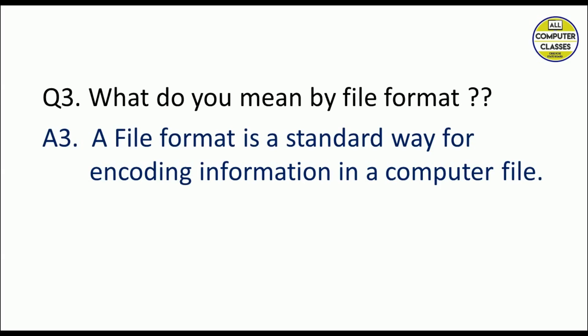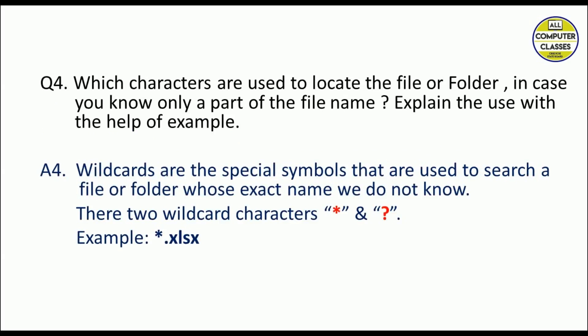Which characters are used to locate file and folders in case you know only a part of a file name? You don't know the exact name or complete name. Explain the use with the help of example. Wildcards are the symbols that are used to search a file or a folder whose exact name we don't know. So we can use these two wildcard characters - this is star and this is question mark. For example, star dot xlsx. So it will find all the files having the extension xlsx.